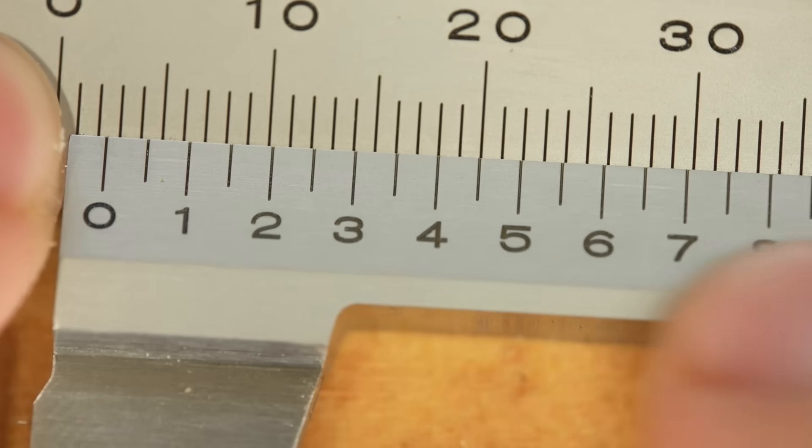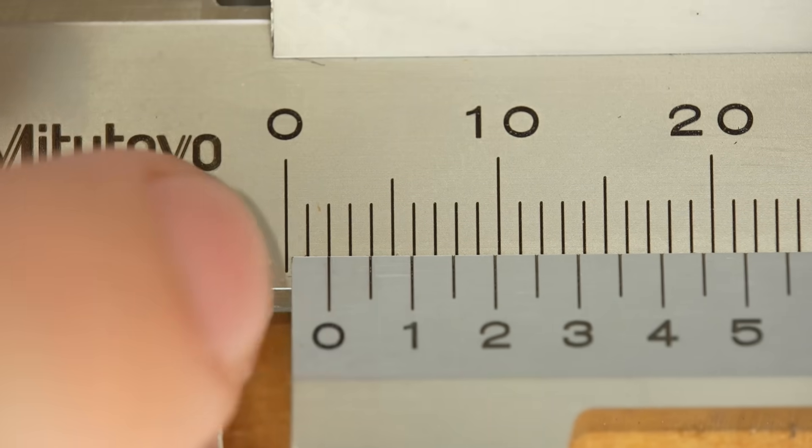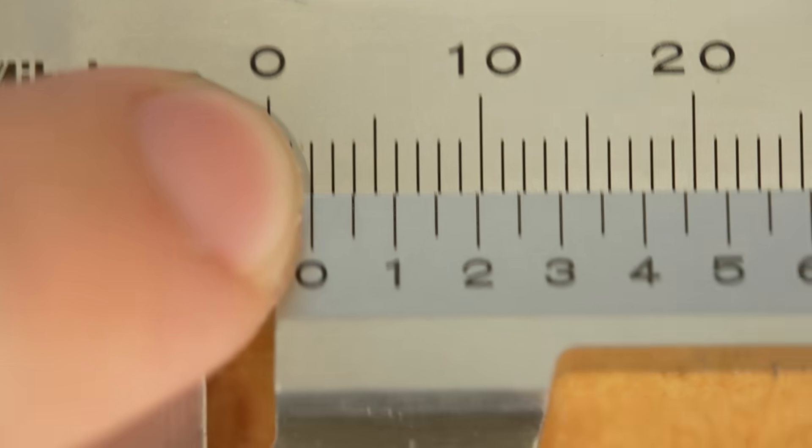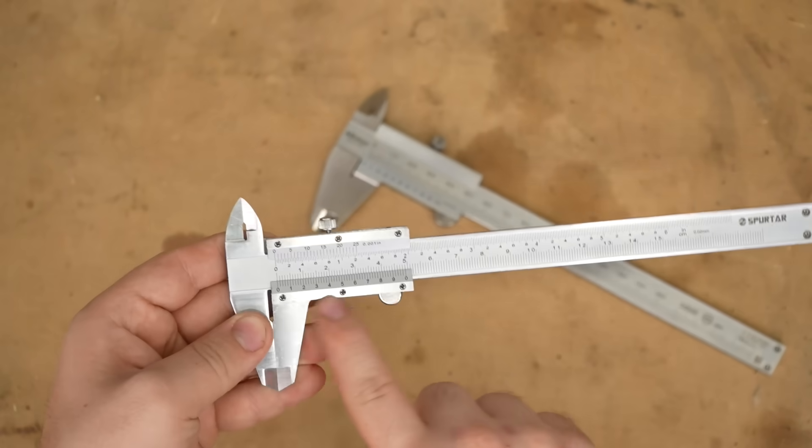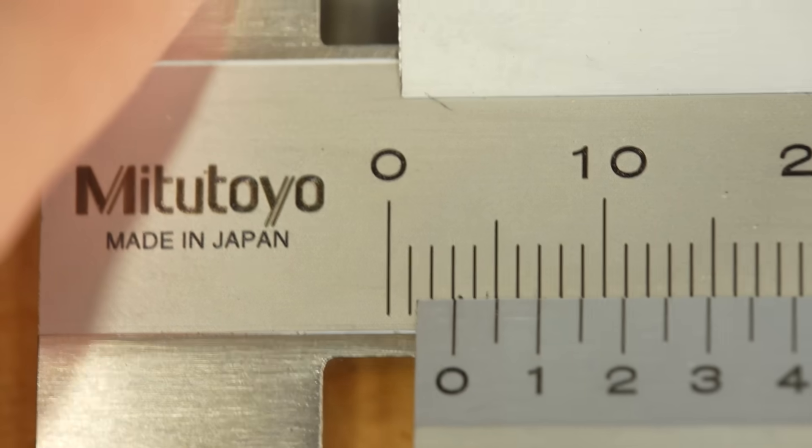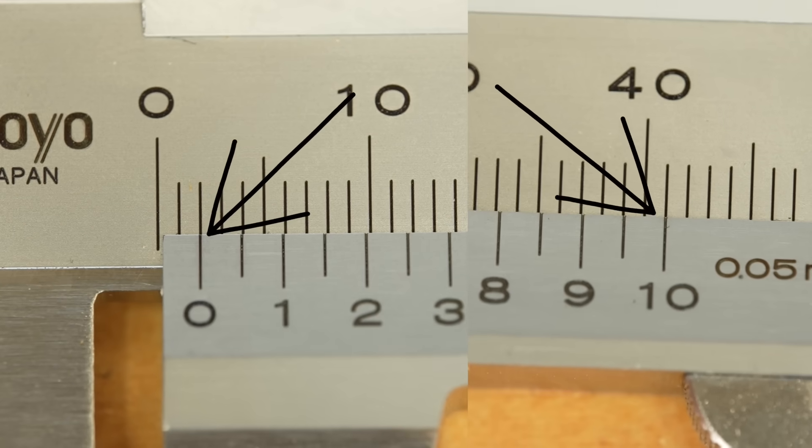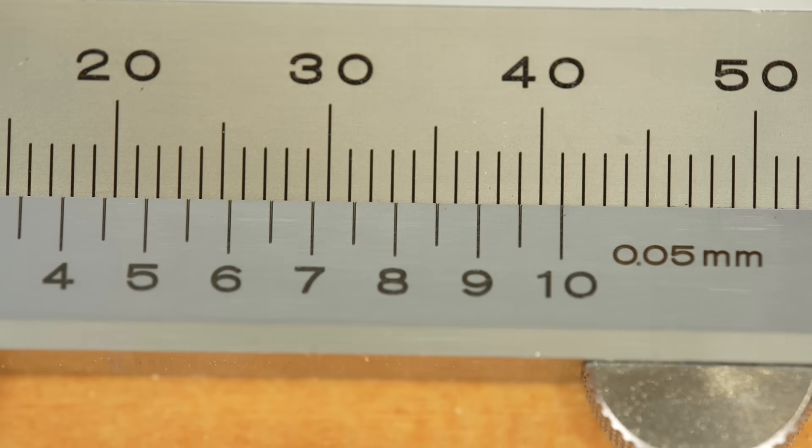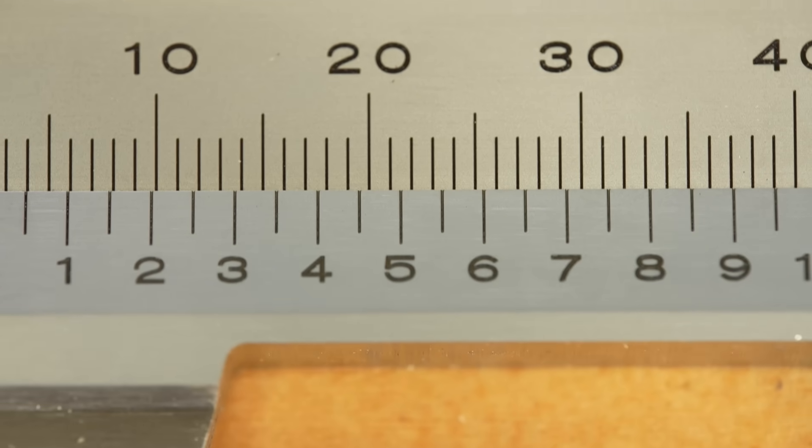This scale works by looking for the line that best matches to the line on the centimeter scale, and that will tell you your decimal points on millimeters. So let's look at some examples to understand how this works. If we're sitting at exactly two millimeters, only the first and last line should align best, meaning that we have no millimeter decimal points, so it is exactly two millimeters.